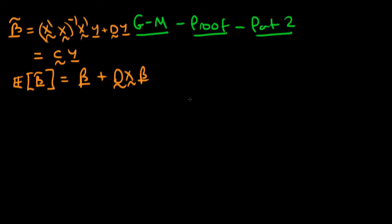In this video we're going to be going through the second part of the proof of the Gauss-Markov theorem in matrix form. Remember at the end of the last video we got this expression for the expectation of beta tilde, where beta tilde was this estimator written up here. The first part was just what we had from least squares, and we added an extra bit onto that estimator.